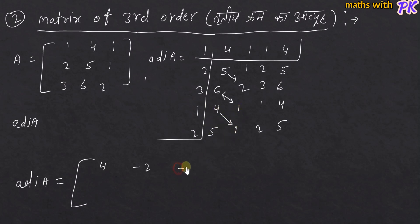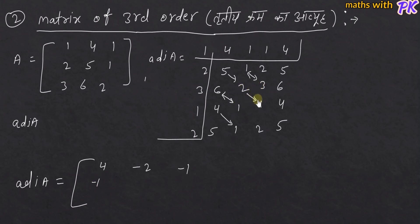तो यहाँ पर रो में लिखेंगे -1। उसके बाद आगे देखिए: 1, 2, 2, 3 — इनका minor देखिए: 1×3 = 3, 2×2 = 4, तो 3 minus 4 = -1। कॉलम वाइज चलते हैं तो रो वाइज लिखेंगे। दूसरी रो में -1 होगा। आगे: 2×1 = 2 minus 1×3 = 3, तो 2 minus 3 = -1। रो में लिखेंगे -1। 1×2 = 2 minus 1×1 = 1, तो 2 minus 1 = 1।